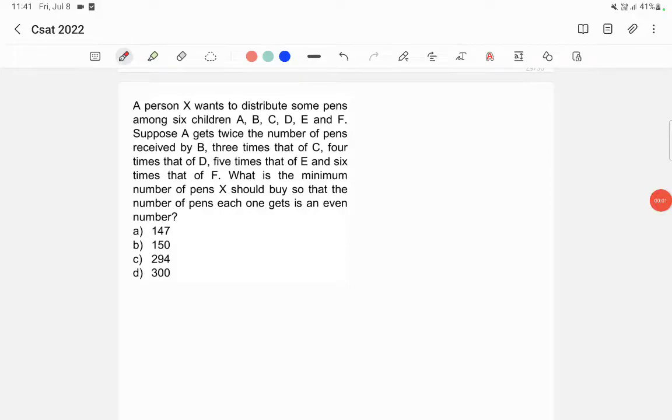A person X wants to distribute some pens among 6 children A, B, C, D, E and F. Suppose A gets twice the number of pens received by B, 3 times that of C, 4 times that of D, 5 times that of E and 6 times that of F. What is the minimum number of pens X should buy so that the number of pens each one gets is an even number?